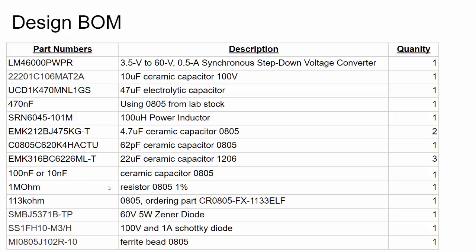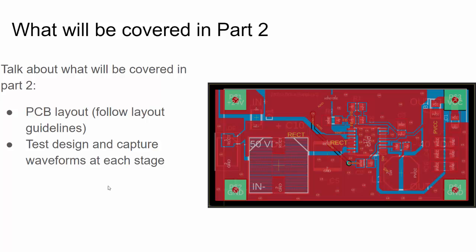That's it for part one. In part two we'll get into PCB layout — you'll have multiple ground planes, thermal considerations, and low-inductance concerns — and we'll do some testing to see what the output looks like, as well as intermediate signals and why they look the way they do based on the circuit. If you have any questions, please use the comment section. Thank you for watching.